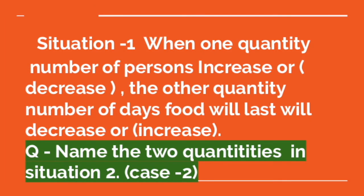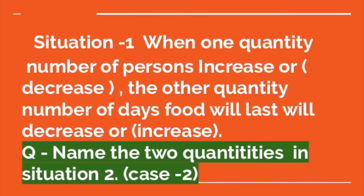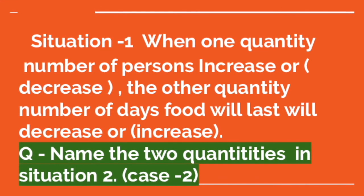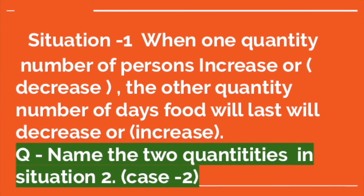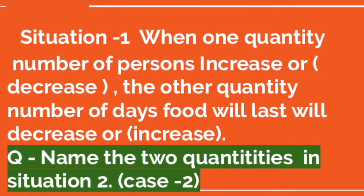What do we see when one quantity i.e. number of persons increase or decrease, the other quantity i.e. number of days food will last will decrease or increase.